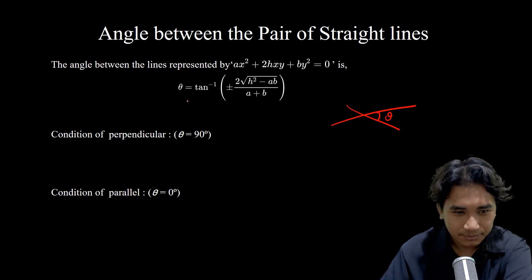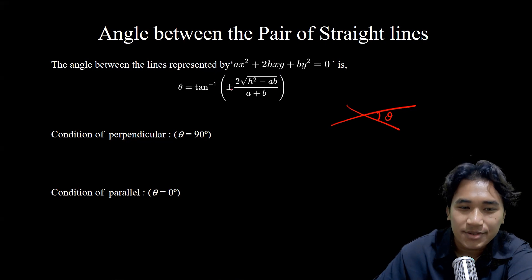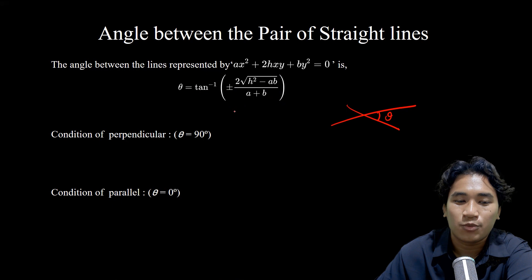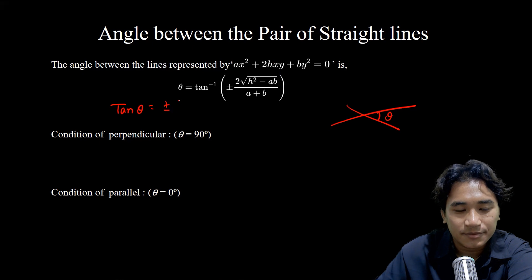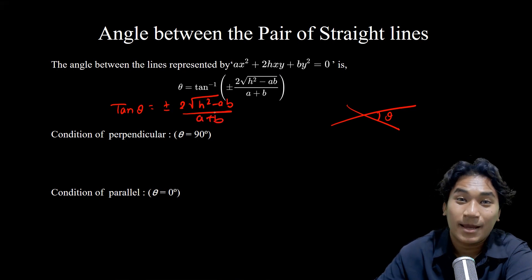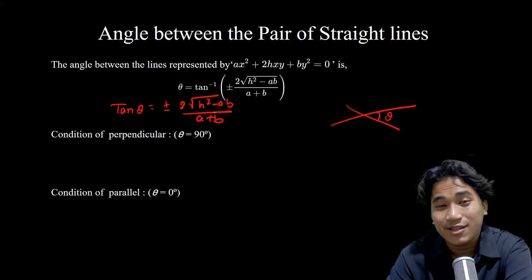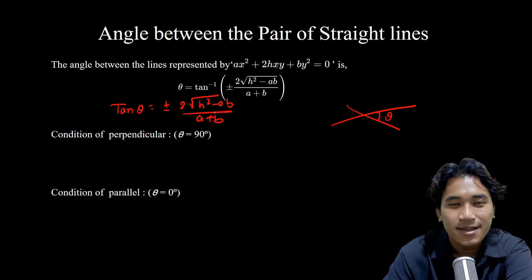The angle between the pair of straight lines is given by the formula: tan theta equals plus or minus 2 times the square root of h squared minus ab, divided by a plus b. M1 and M2 are the slopes of the two lines.